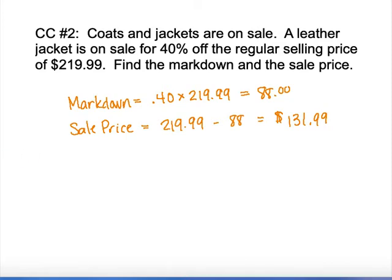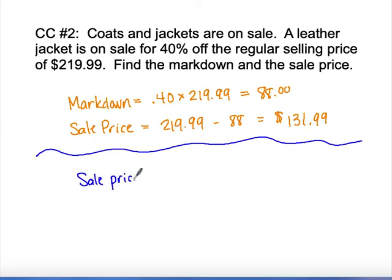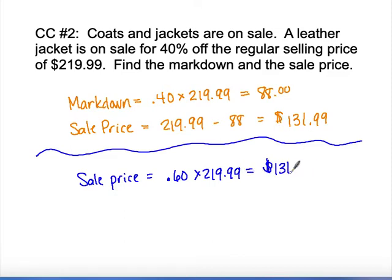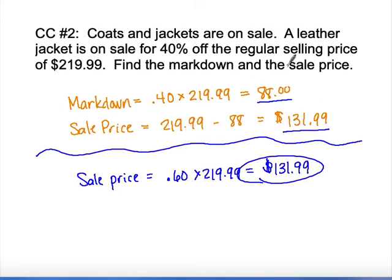Alternatively, if the markdown rate is 40%, the sell price is 60% of $219.99, which also gives $131.99 directly. The only issue with that shortcut method is that you miss calculating the actual markdown — and this question asked for both the markdown and the sell price. So pay attention to what the question is asking for.